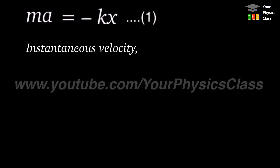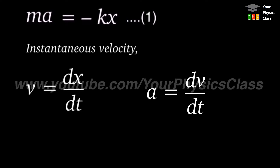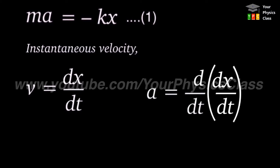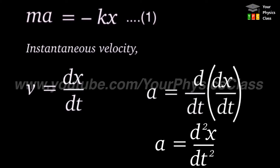Instantaneous velocity is equal to the derivative of displacement with respect to time t. And acceleration is equal to the derivative of velocity with respect to time t. Substituting the value of v in the equation of acceleration, we get a equals d/dt of dx/dt, that is equal to d²x/dt².